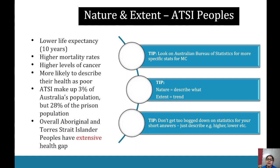Remember, 'nature' is describing what the health inequities are — in this case describing the health inequities they're facing. 'Extent' is where we give trends — for example, higher mortality rates and higher levels of cancer. That is the extent of the health inequity they are experiencing.